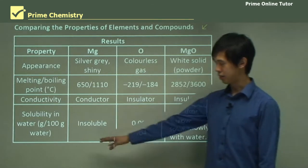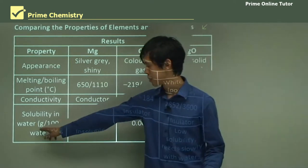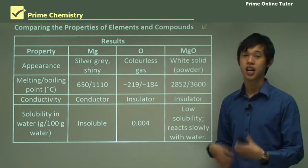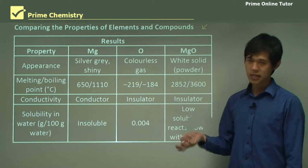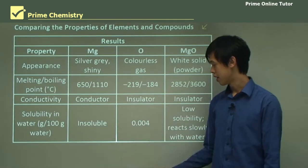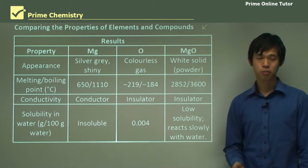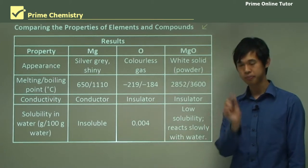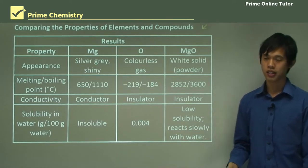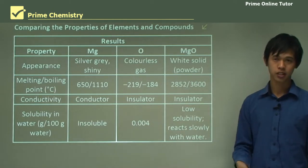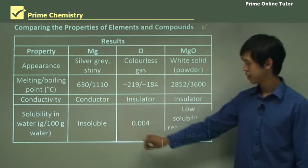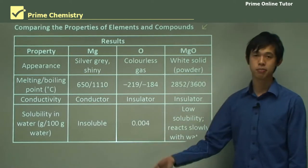And then finally, solubility in water. The unit that we're using for solubility is the grams of the substance that can dissolve in 100 grams of water. Magnesium is insoluble, it'll just sit in the water, maybe oxidize a little bit. Oxygen, 0.004 grams per 100 grams of water. So it will dissolve a little bit. And magnesium oxide has a very low solubility. It reacts really slowly with water. But it actually reacts with water. So it's a little bit different in terms of its solubility. So again, its chemical properties are different to these two.